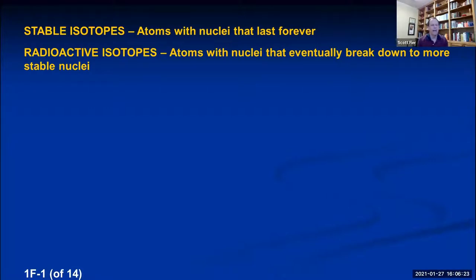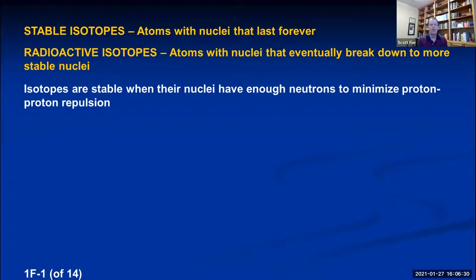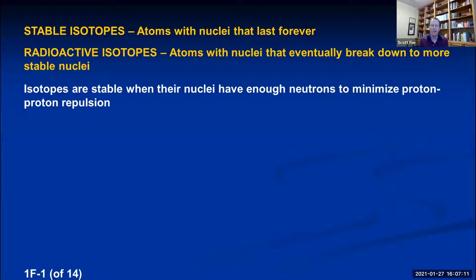Is there any way to determine for a given element what isotopes would be stable and what would be radioactive? There actually is. Isotopes are stable when their nuclei have enough neutrons to minimize proton-proton repulsion. In a nucleus, there are lots of positive charges very close together, and you'd wonder why the nucleus stays together, since positive particles repel each other. The neutrons buffer that repulsion — you have to have enough neutrons so that the protons don't repel each other and cause the nucleus to fly apart.